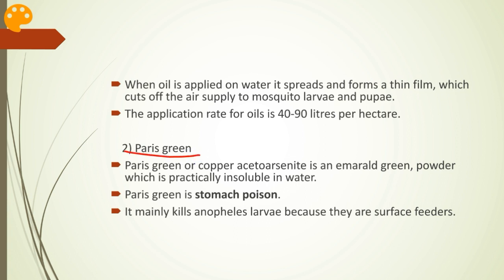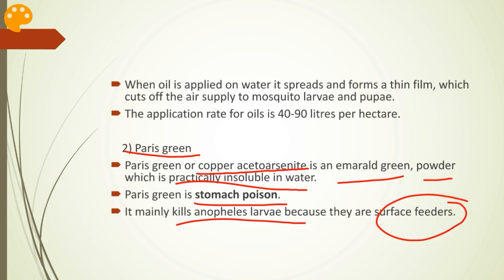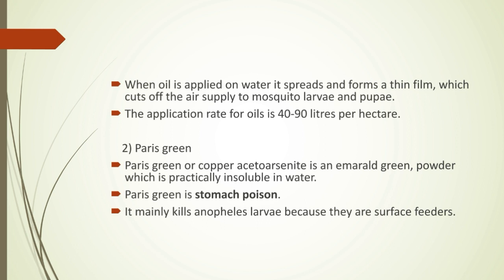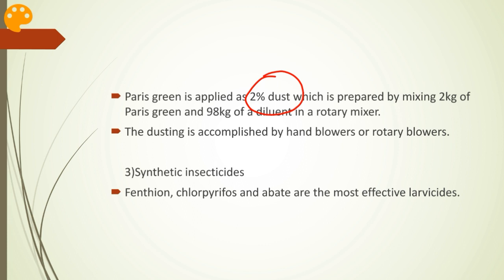Paris green, also known as copper aceto-arsenide, is an emerald green powder which is practically insoluble in water. Its mechanism of action is as a stomach poison. It mainly kills Anopheles larvae because they are surface feeders — when the larvae come to the surface of water, they come in contact with the Paris green powder, which enters their stomach and kills them. Paris green is applied as a 2% dust prepared by mixing 2 kg of Paris green and 98 kg of a diluent such as slate lime or soapstone powder in a rotary mixer. Dusting is accomplished by hand blowers or rotary blowers.